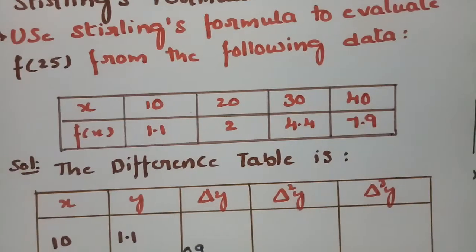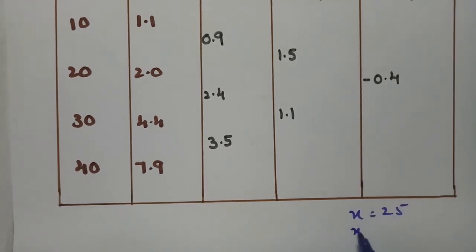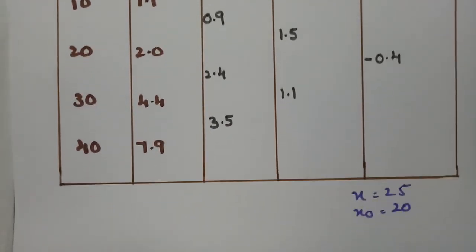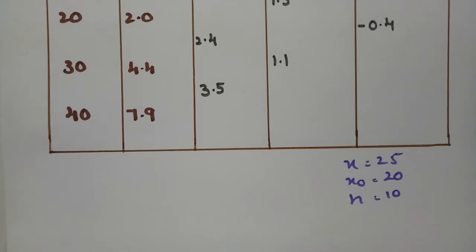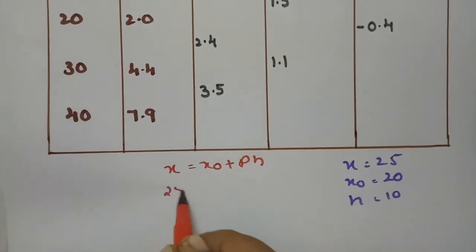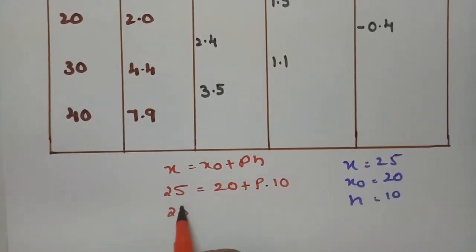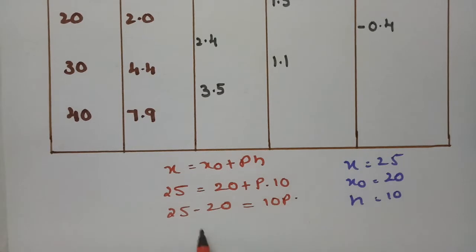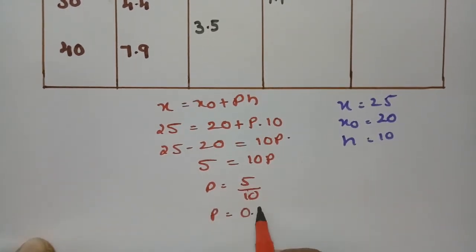To find f(25), we identify x₀ as the nearest value to 25, which is 20. The step size h is the interval difference: 40 − 30 = 10. Using x = x₀ + p·h, we substitute: 25 = 20 + p×10, giving 5 = 10p, so p = 0.5.